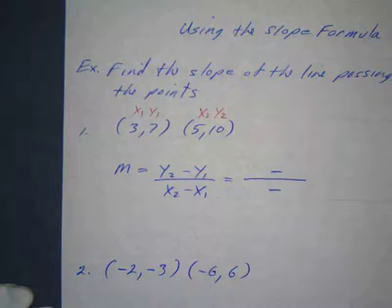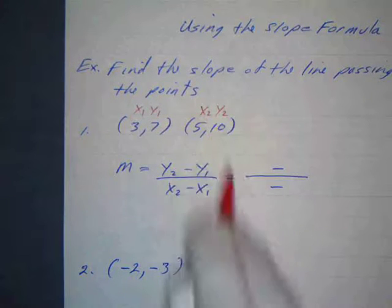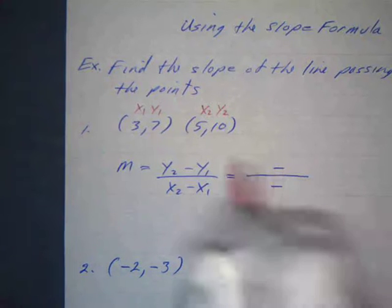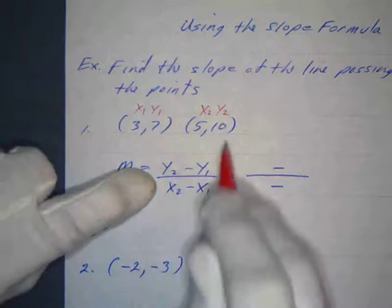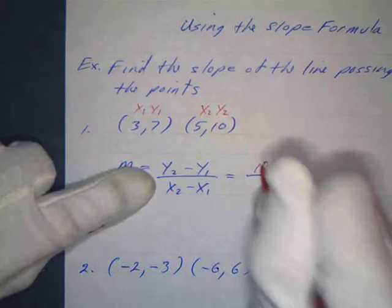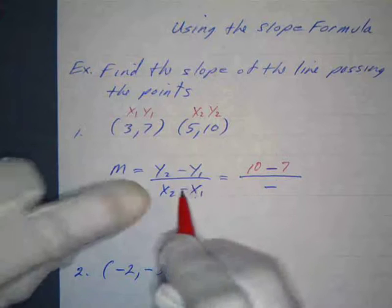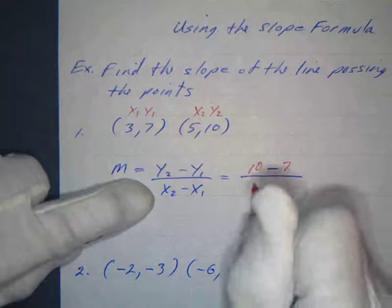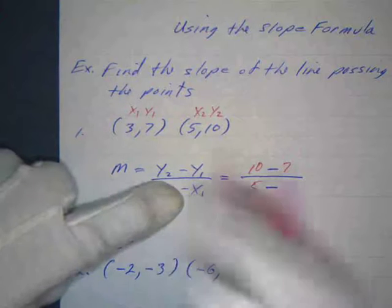That's the way I always do it. But you could reverse those, it won't make any difference. And then I carefully substitute my data into the formula. Once I have this written it's very easy because I say okay what's Y2? Y2 is 10. What's Y1? Y1 is 7. What's X2? It's right up here, X2 is 5. And what's X1? X1 is right there, X1 is 3.